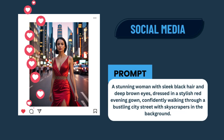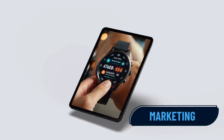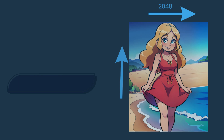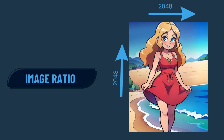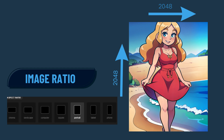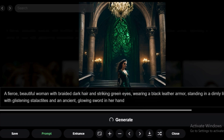Create engaging visuals effortlessly. Whether it's static images for social media or animated GIFs for marketing, MageSpace has you covered. Automatically upscale your images to 2048 by 2048 resolution, ensuring professional quality for all your projects. Generate images privately, giving you full control over the visibility of your creations — perfect for confidential projects.